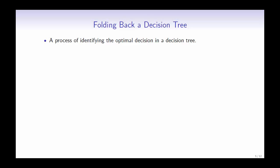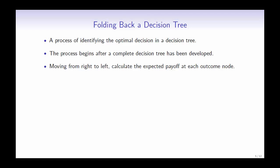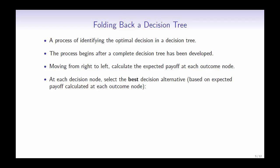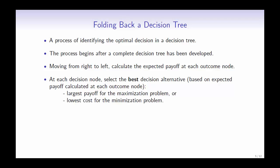Folding back a decision tree is a process of identifying the optimal decision. The process begins after a complete decision tree has been developed. Moving from right to left, we calculate the expected payoff at each outcome node. At each decision node, we then select the best decision alternative based on the expected payoff at each outcome node. For a maximization problem, we would select the largest payoff, and for a minimization problem, we would select the lowest cost.